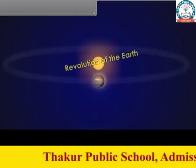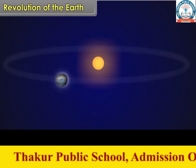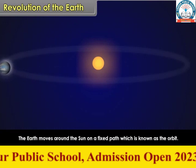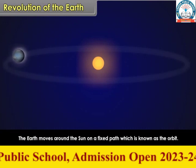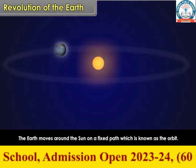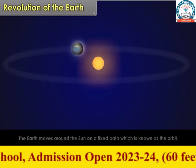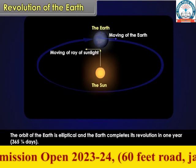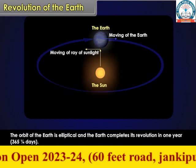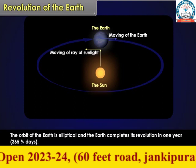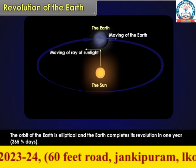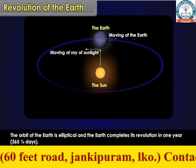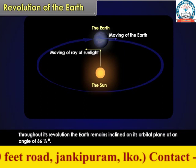Revolution of the Earth: the earth moves around the sun on a fixed path, which is known as the orbit. The orbit of the earth is elliptical and the earth completes its revolution in one year — 365 and one-fourth days.